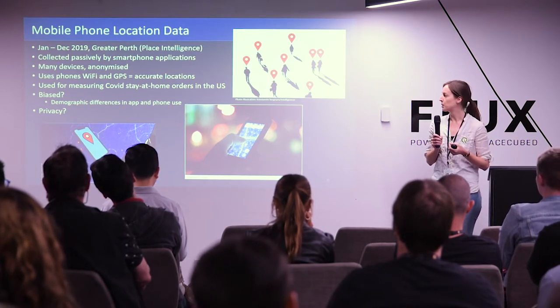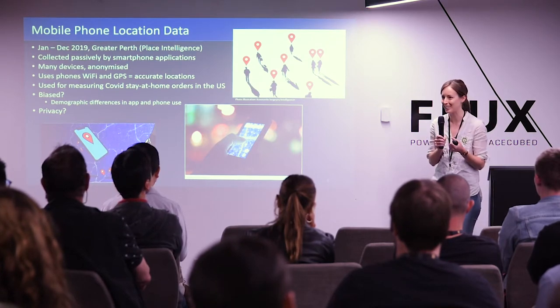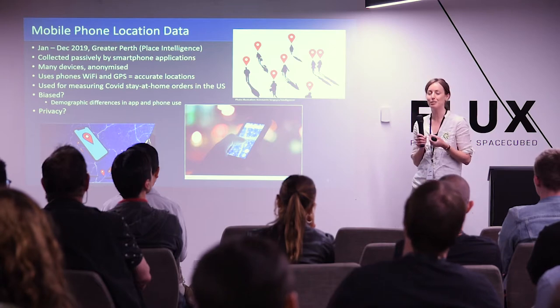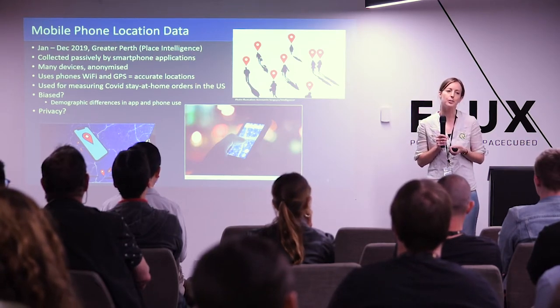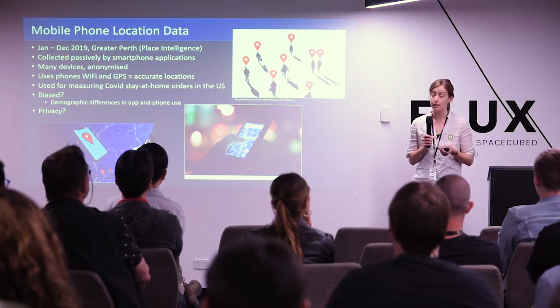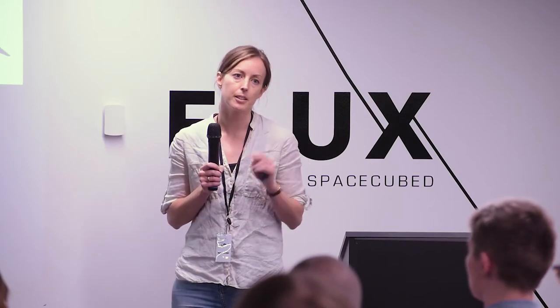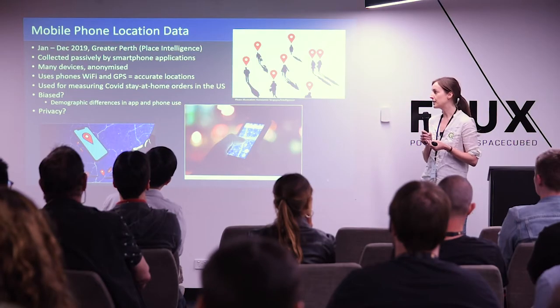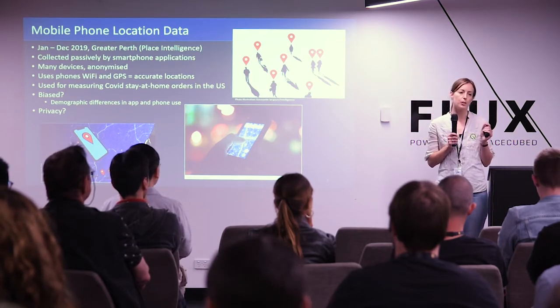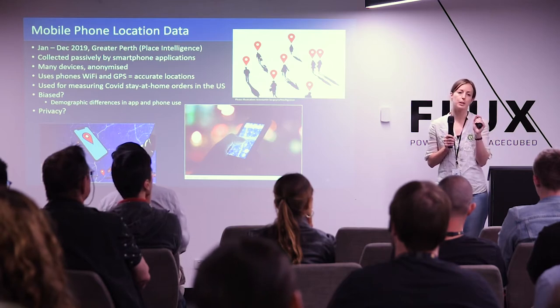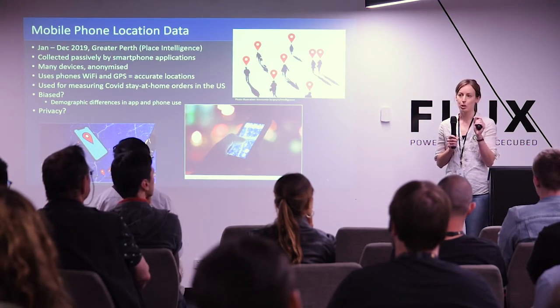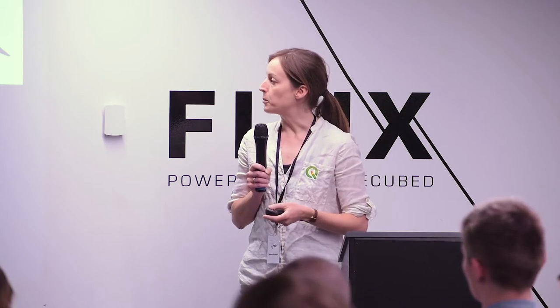Obviously there are issues with it. One is bias — there are demographic differences in the apps people use, how they use apps, how they use their smartphones, and how apps collect data. Some people don't carry a smartphone at all. The companies do pay attention to try and minimise bias and have processes for that. The other issue is privacy. European studies have found that with only four geolocated points it's possible to identify someone — if someone can see where your home, work, and your child's school are, it wouldn't be hard to figure out who you are. That was something we had to address in this study.